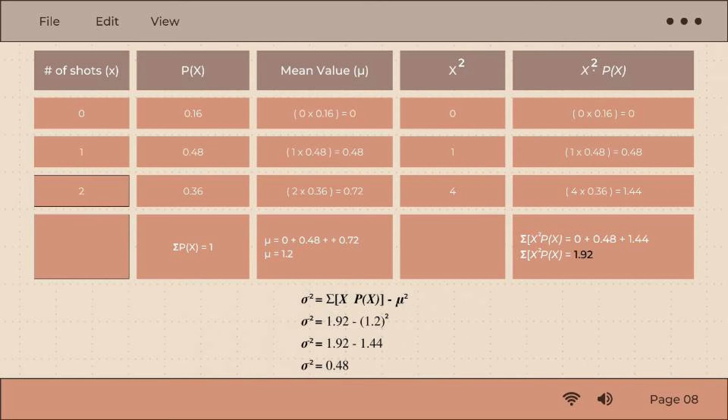So 0 times 0.16 equals 0, 1 times 0.48 equals 0.48, and 4 times 0.36 equals 1.44. Next we're going to find the sum.